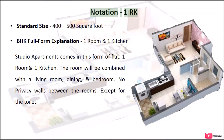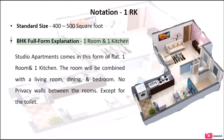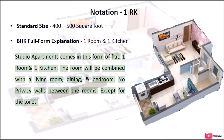Notation: 1 RK. Standard size: 400–500 square feet. This means 1 room and 1 kitchen. Studio apartments come in this form of flat. The room will be combined with a living room, dining, and bedroom. There are no privacy walls between the rooms, except for the toilet.